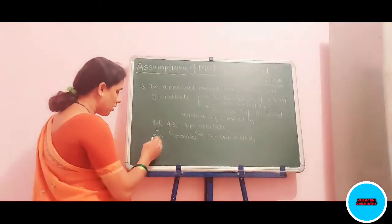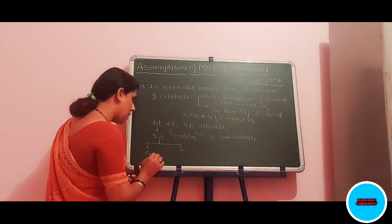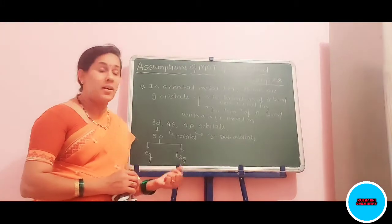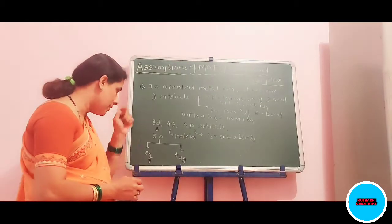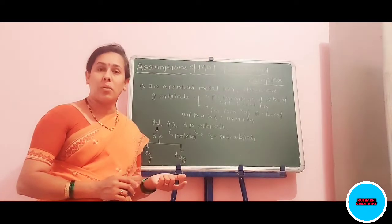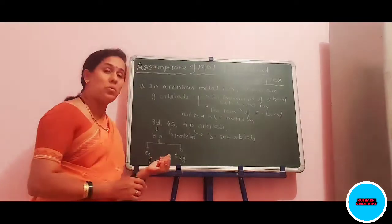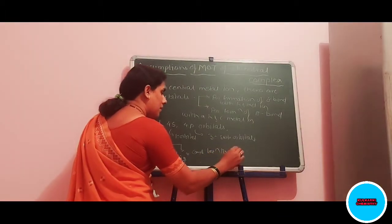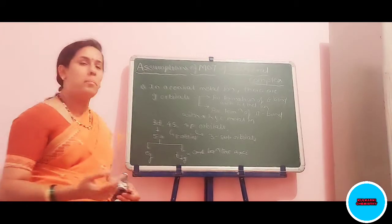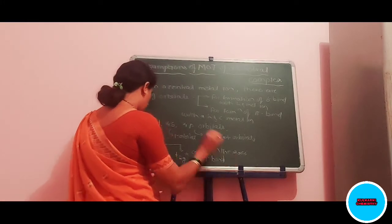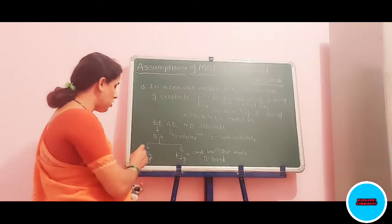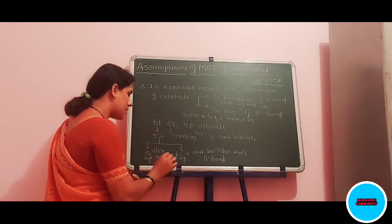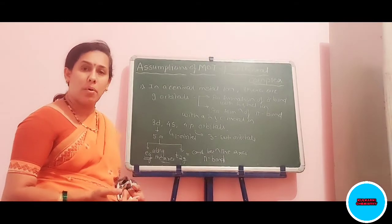In 3D, the orbitals are classified into two types: first is EG, and second is T2G. There is a basic difference between these two types. The orbitals coordinated along the axis are EG orbitals, while the orbitals coordinated between the axes are T2G orbitals. T2G orbitals are located between the axes, so they can form pi bonds. EG orbitals are located along the axis, so they can take part in the formation of sigma bonds with the central metal ion.